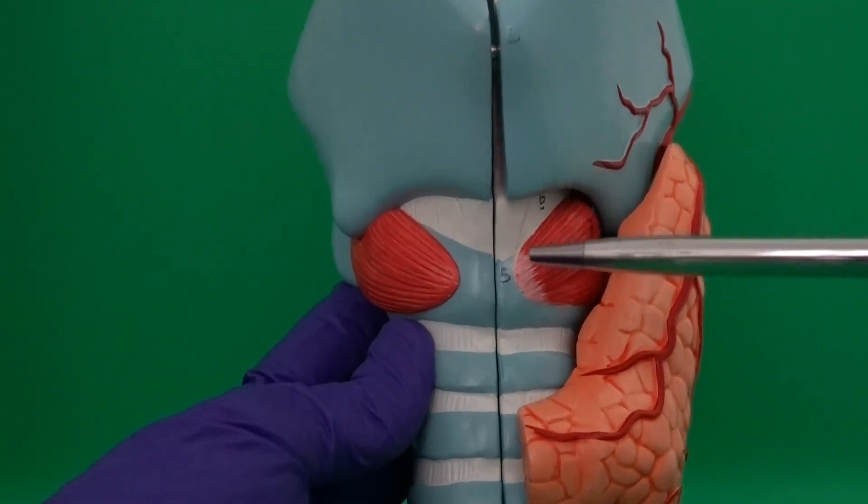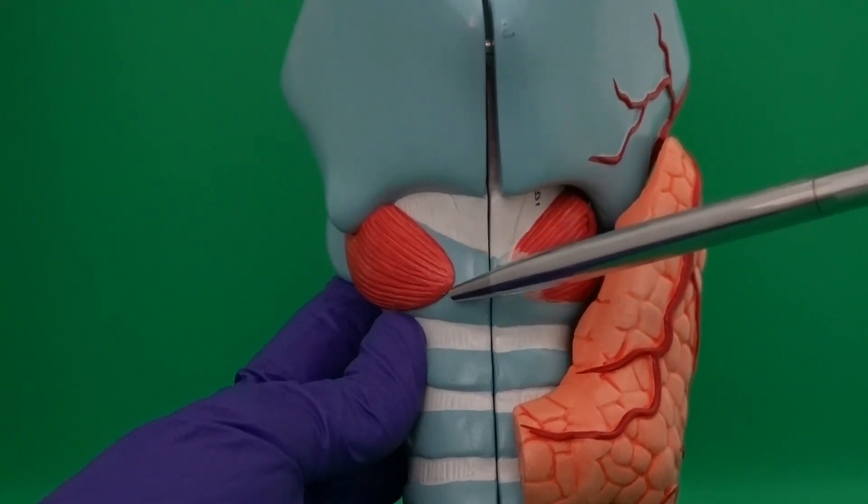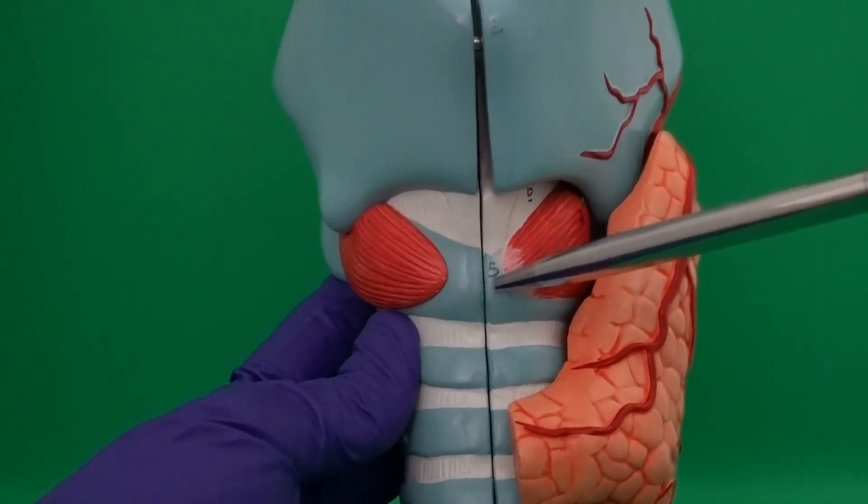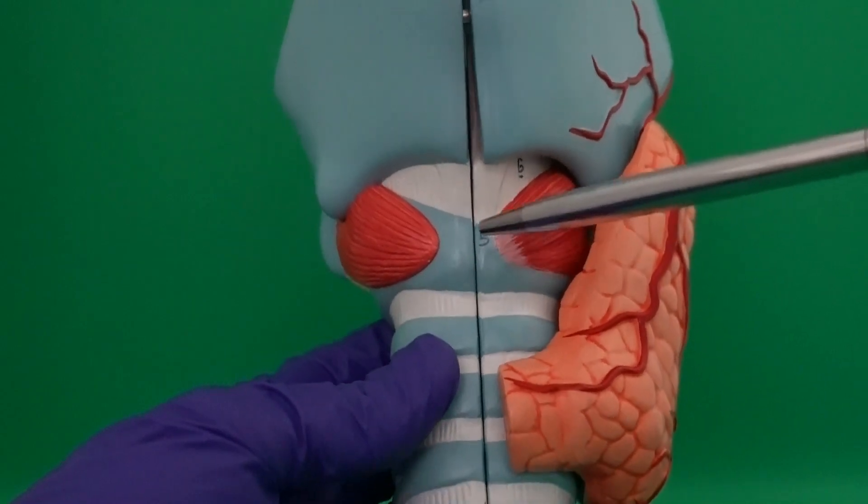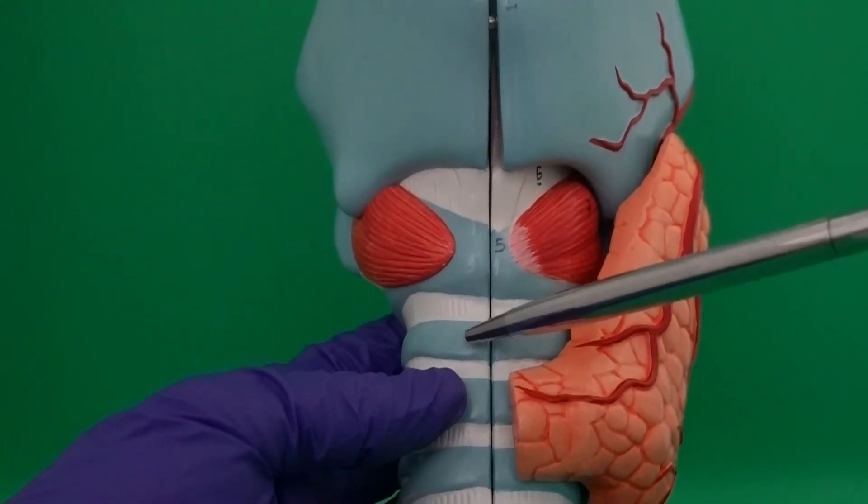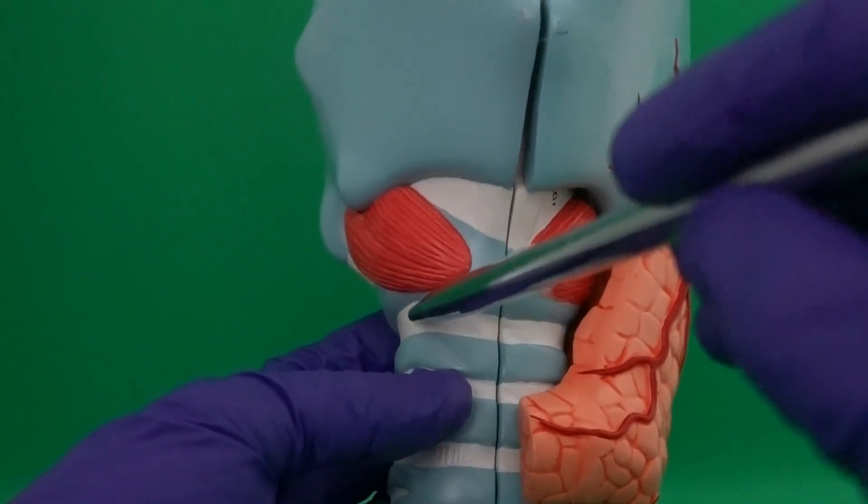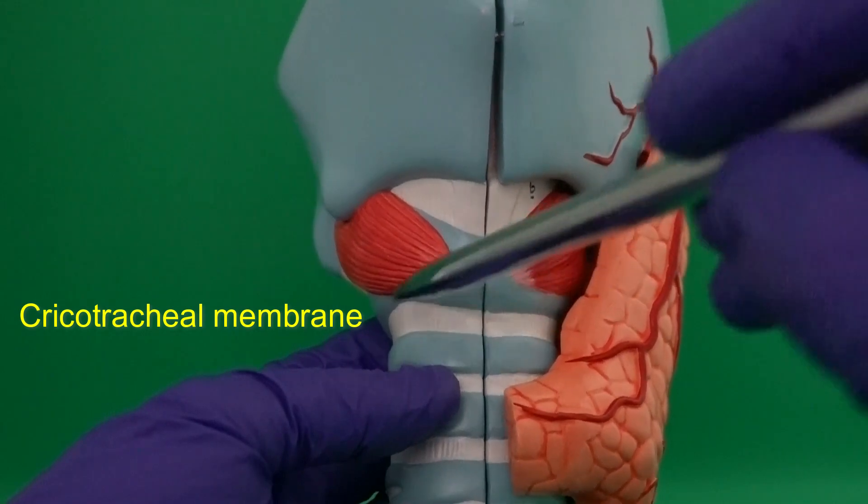Trachea is one of our airways that starts exactly below the larynx. Recall, the lowest cartilage in larynx is cricoid cartilage. We see that cricoid cartilage is connected to the first tracheal cartilage by a strong, dense connective tissue membrane named cricotracheal membrane.